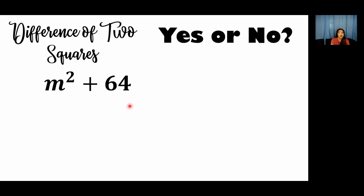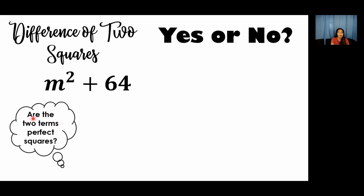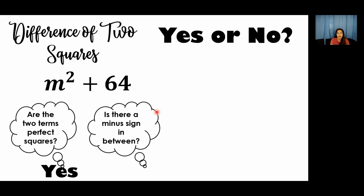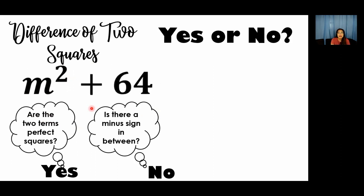Next example: m squared plus 64. First condition — are the two terms perfect squares? Yes, m squared and 64 are both perfect squares. But on our second condition — is there a minus sign in between? The answer is no. Therefore, m squared plus 64 is not a difference of two squares, and we cannot factor it using the technique for difference of two squares.